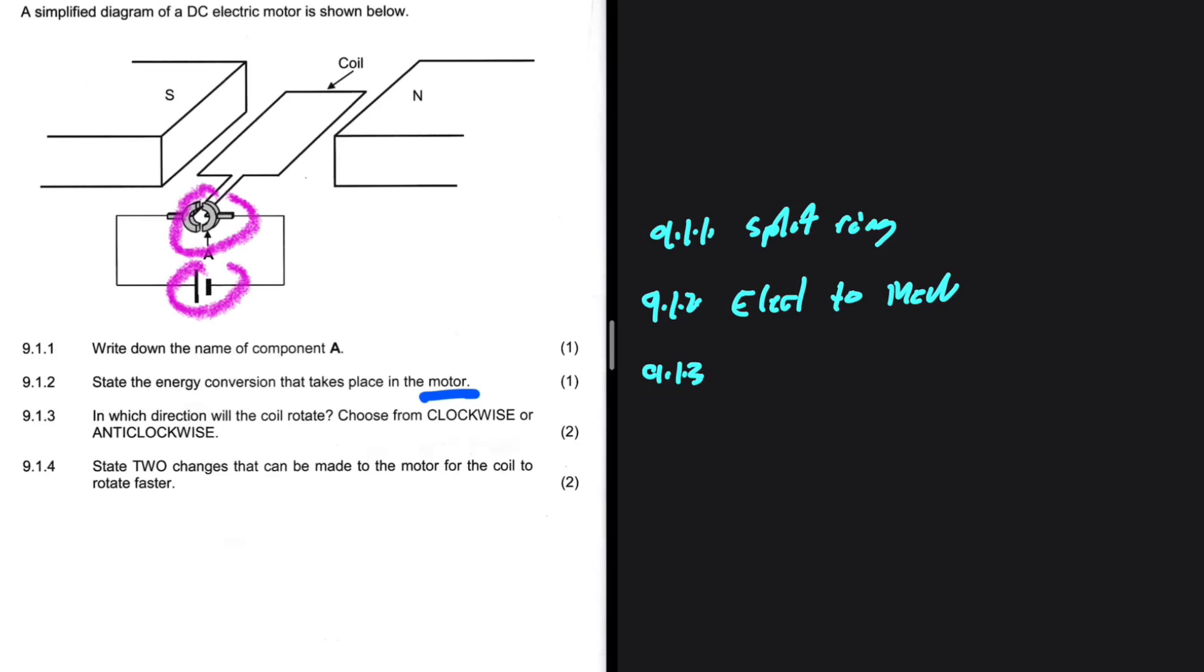With a motor, we use the left hand. So your index finger will point from north to south. Your middle finger is the direction of the current. And your thumb is the force of the rotation of the coil.